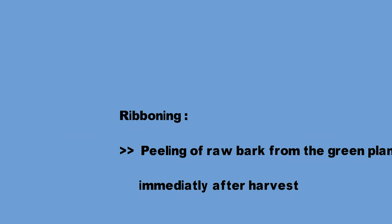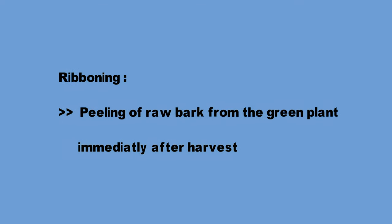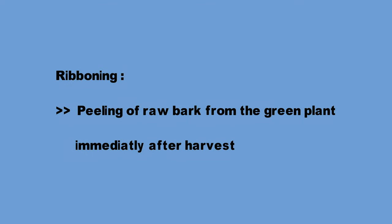Ribboning is the peeling of raw bark from the green plant immediately after harvest. You can see the process of ribboning in the video. These ribbons are then bundled for the process of retting.